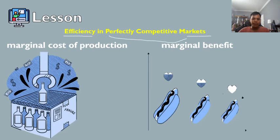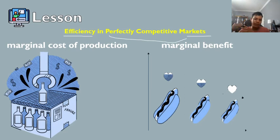When profit-maximizing firms in perfectly competitive markets are combined with utility-maximizing consumers, something remarkable happens. The result is that the quantities of outputs of goods and services demonstrate both productive and allocative efficiency.